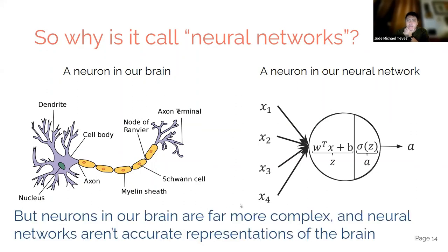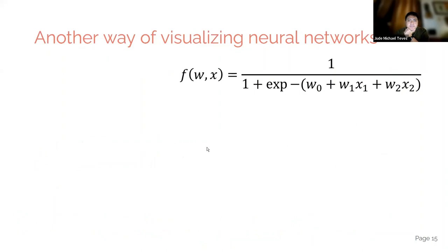Yeah, as I said it's more complex than that. It's not really an accurate representation of the brain, but it's good enough. So how can we visualize neural network? This is simply a logistic regression equation.